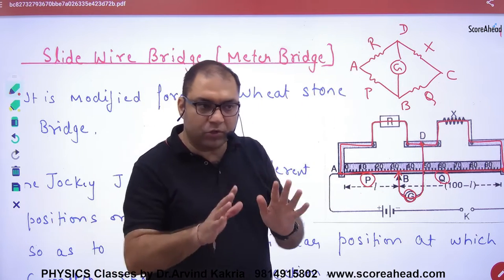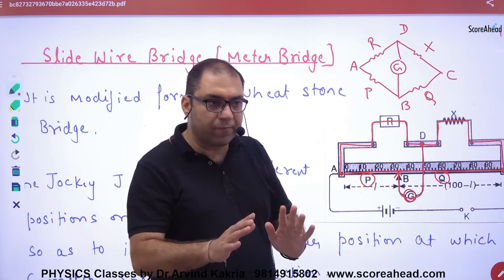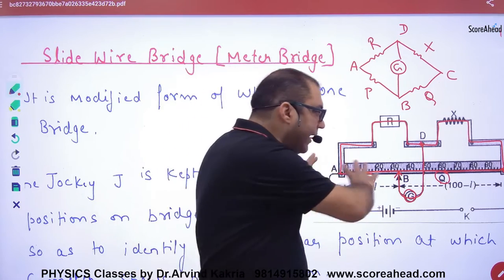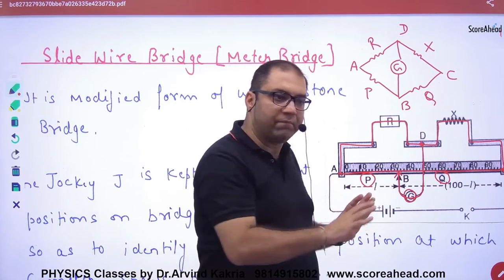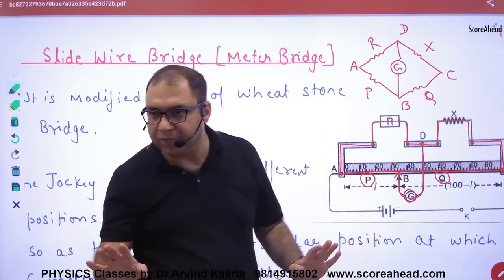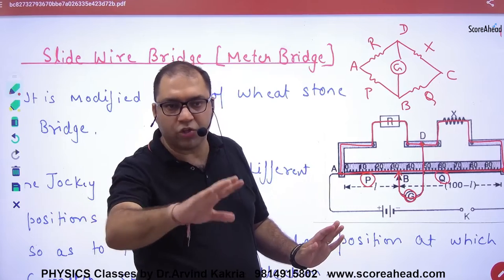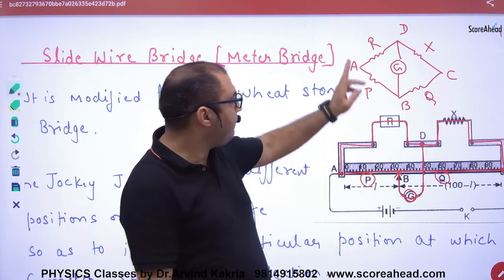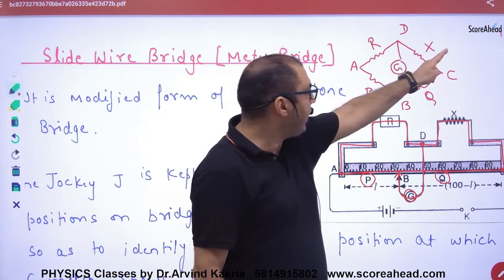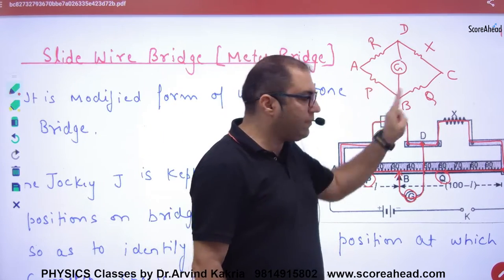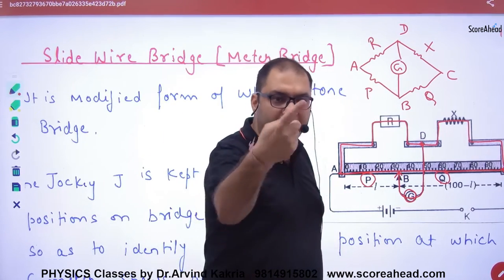So in the Wheatstone bridge or slide wire bridge, the balance condition is: R divided by X is equal to P divided by Q, when the bridge is balanced.